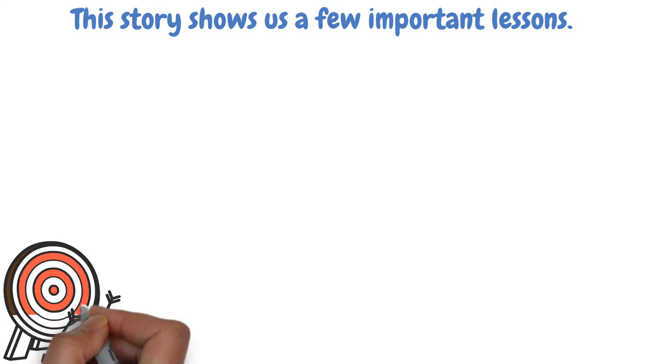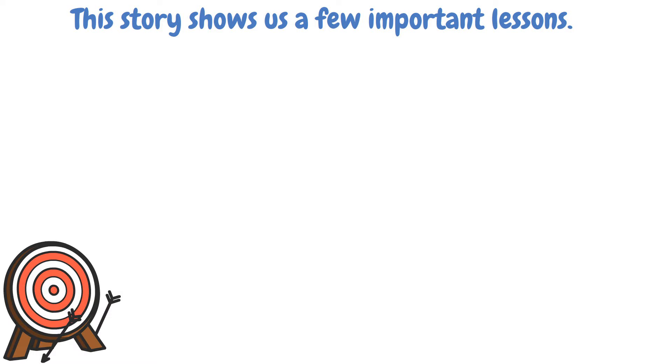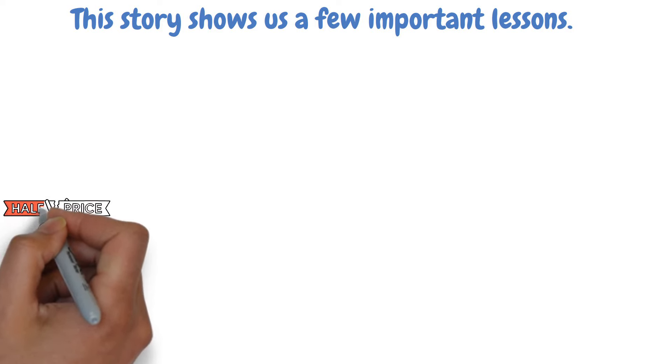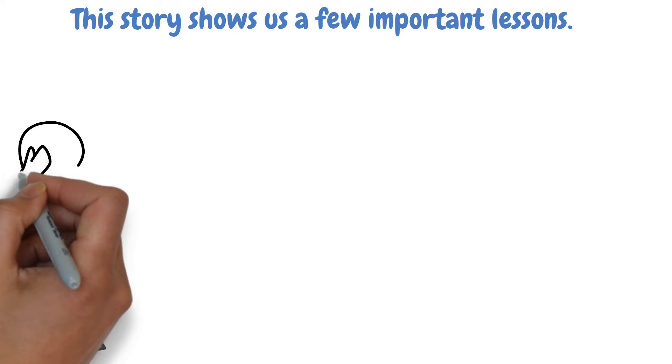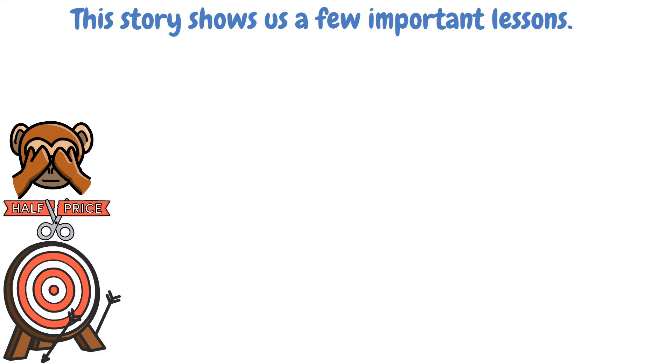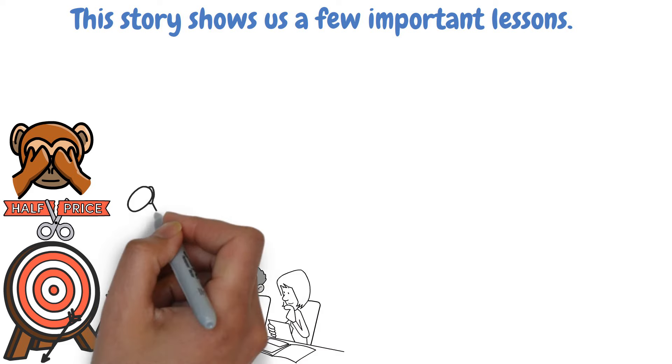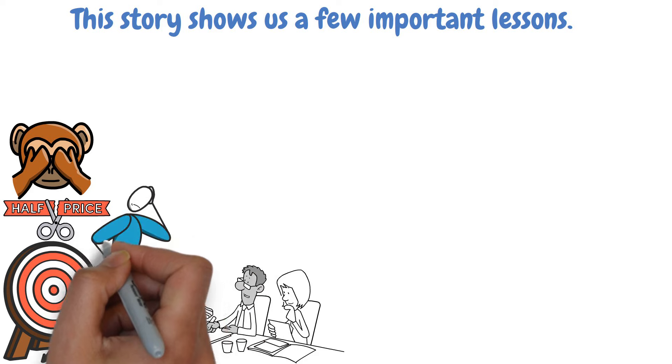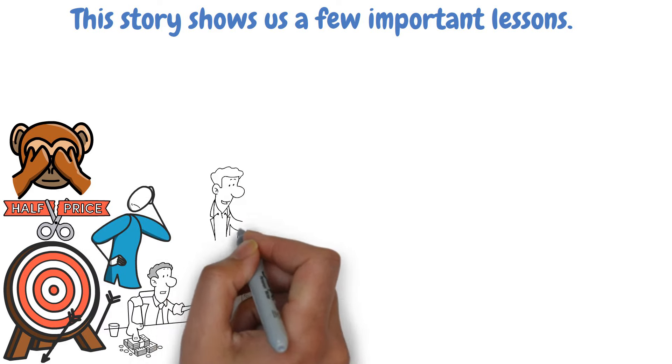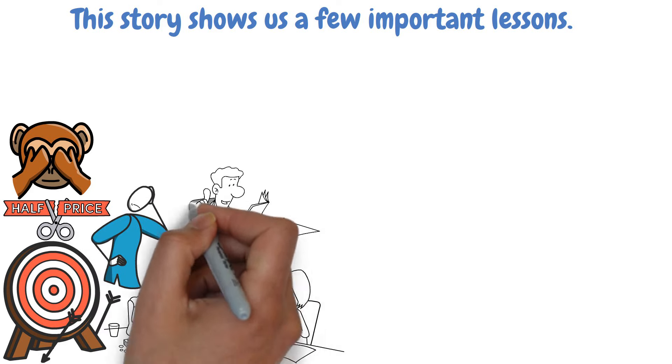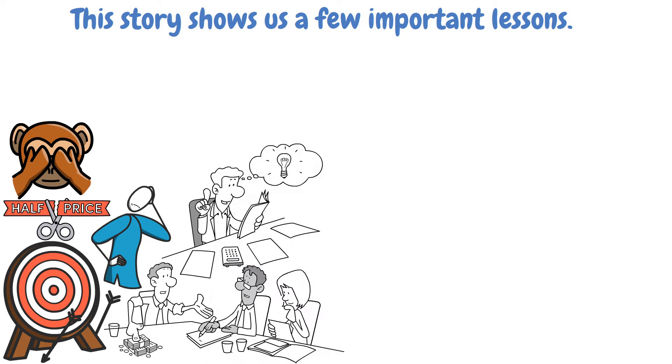This story shows us a few important lessons. First, you might not succeed the first time you try. In his car leasing business, Jack was only competing by offering lower prices, which didn't really excite his customers. It was tough to make people happy when all they did was use a car and pay for it every month for five years. He wasn't using his real talents in that business.